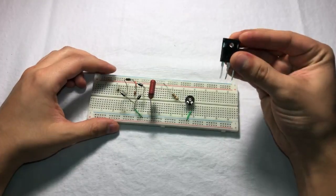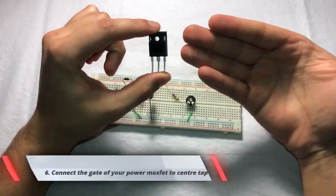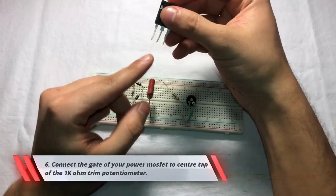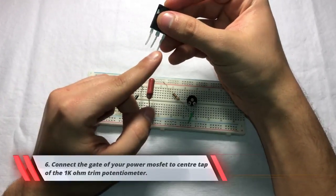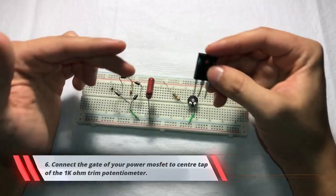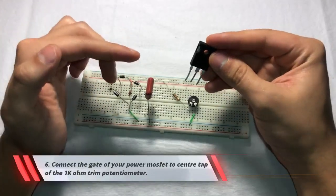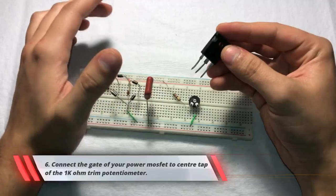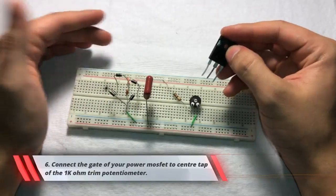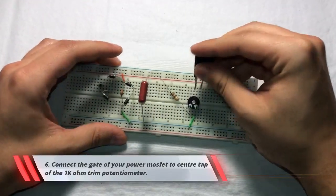And here we have our power MOSFET. So this one and many other MOSFETs it goes gate, drain, source. So that's how we're going to be connecting it to our circuit. So I just recommend before if you're using a different one just look up the data sheet online so you avoid any confusion there. But it should be the same for most.